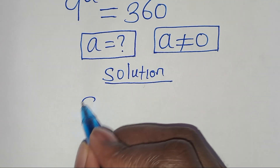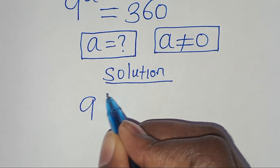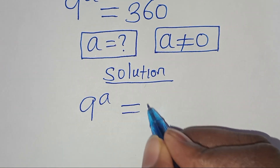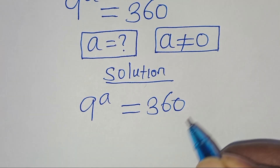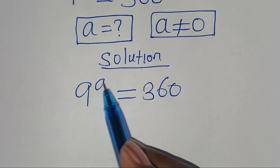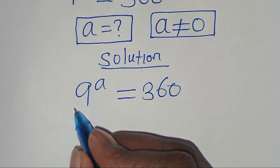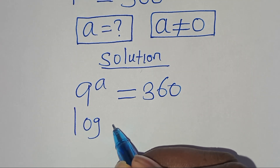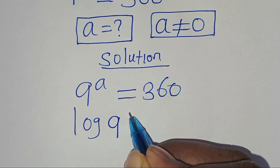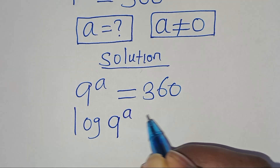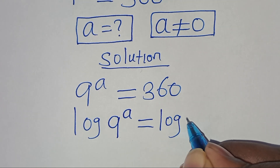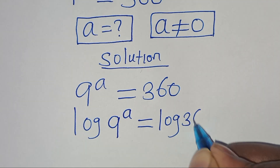So we have 9 to the power of a, this is equal to 360. To solve for a, we introduce logarithm on both sides, so that we have log 9 to the power of a, this is equal to log 360.